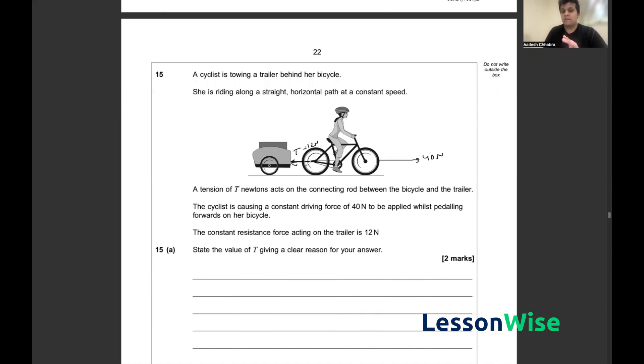In order to balance the forces, since she's moving at constant speed, we have to write the balance such that the driving force is equal to the resistive force plus the tension, where 40 would be equal to R plus 12, and R would thus be equal to 28 newtons. That is the final part of question 15.